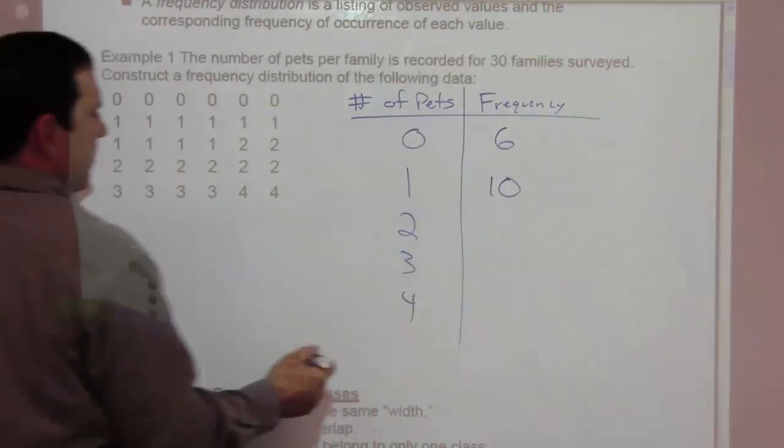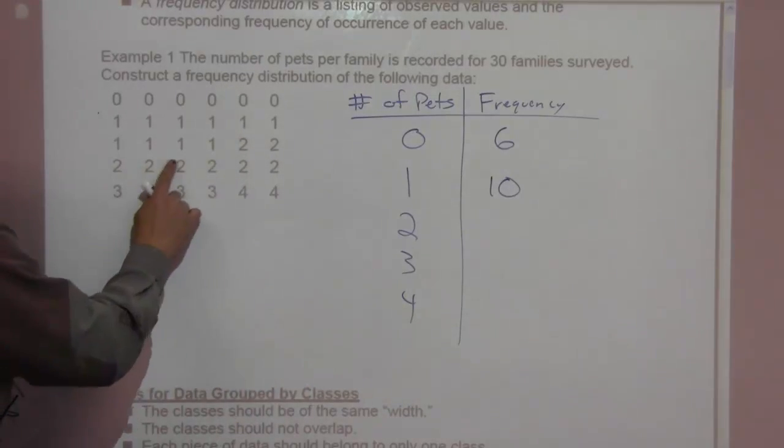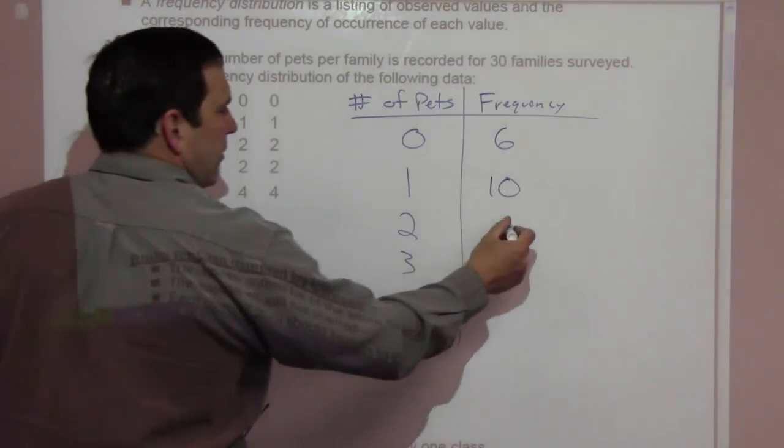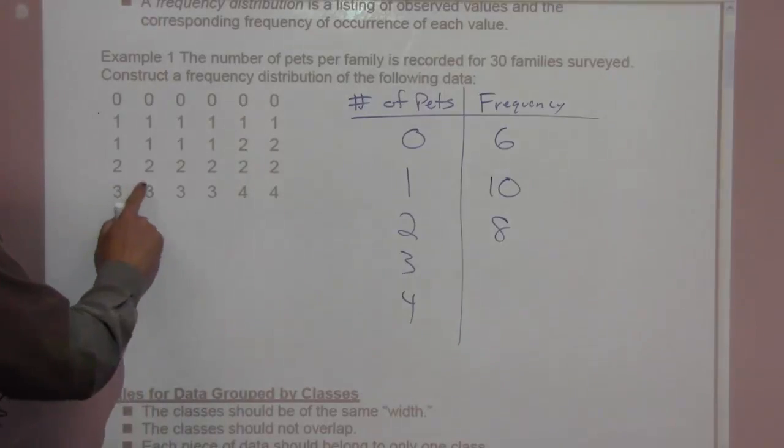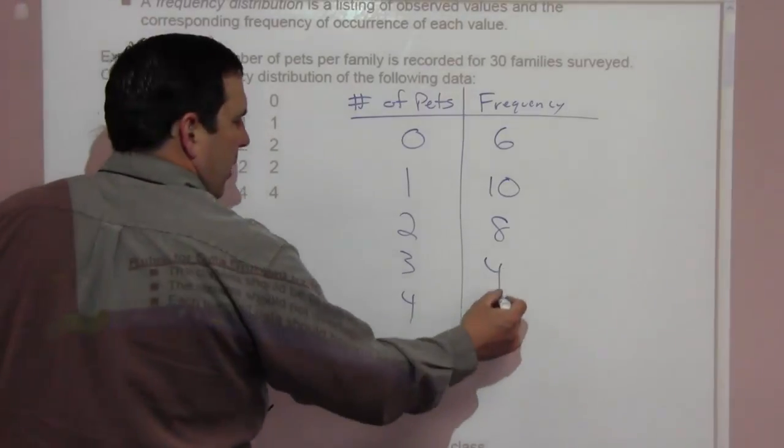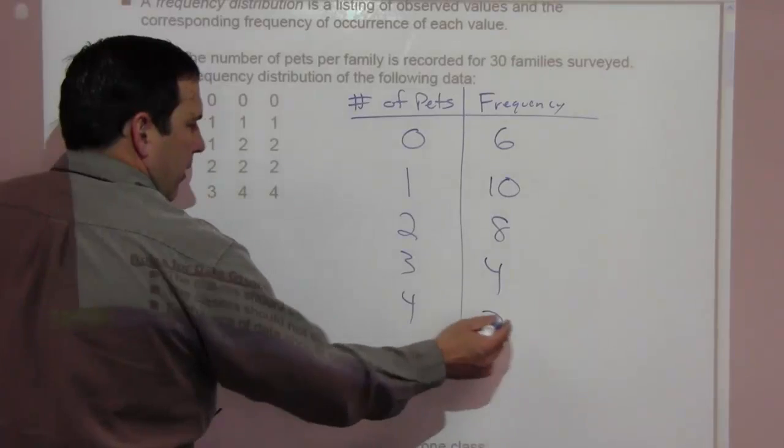Ten people have one pet. One, two, three, four, five, six, seven, eight. Eight people have two pets. One, two, three, four. Four people have three pets and two people have four pets.